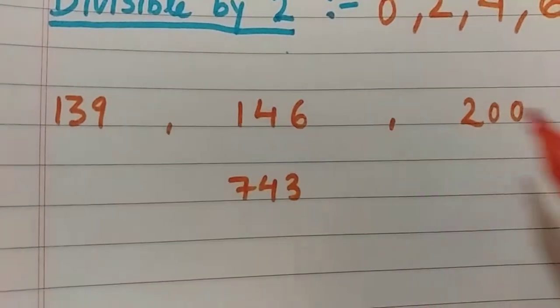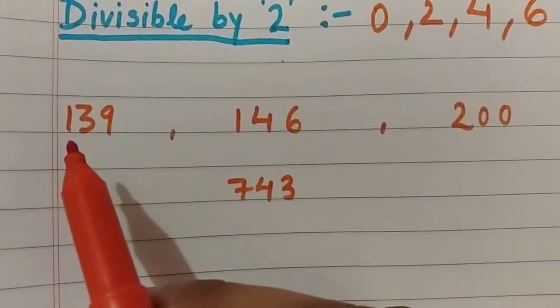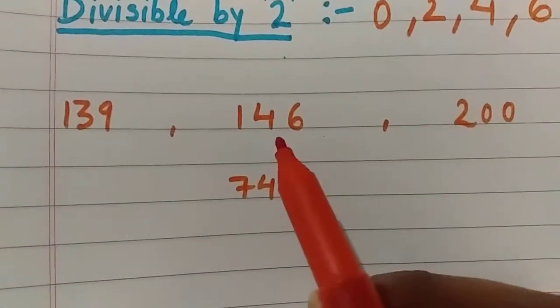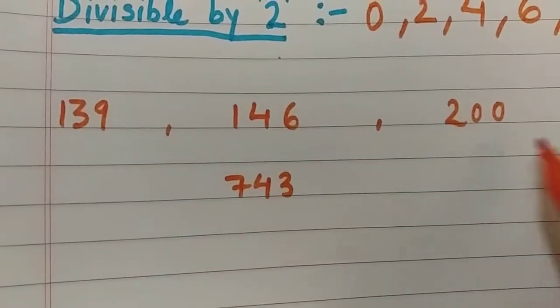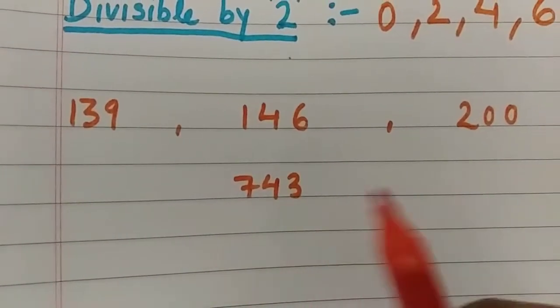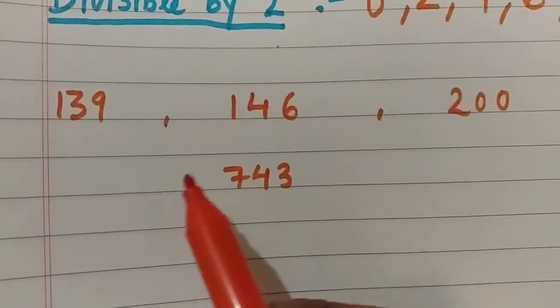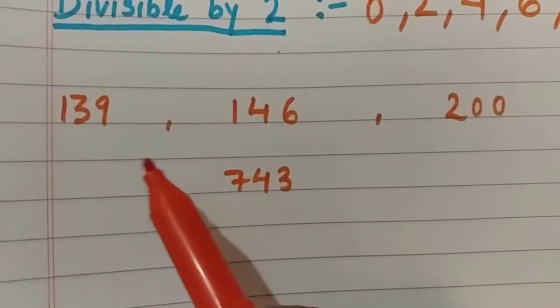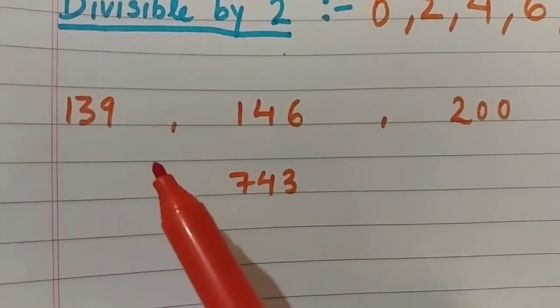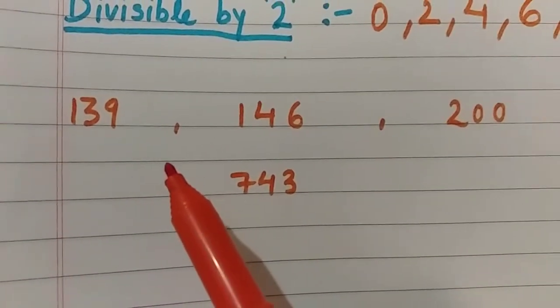We have 4 numbers: 139, 146, 200, and 743. Now we will identify whether each number is divisible by 2 or not.